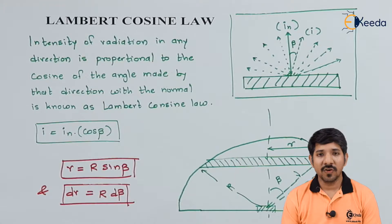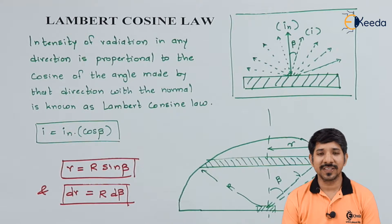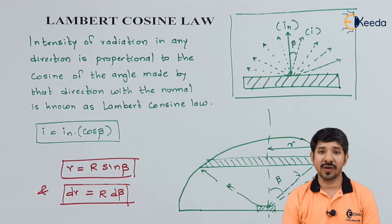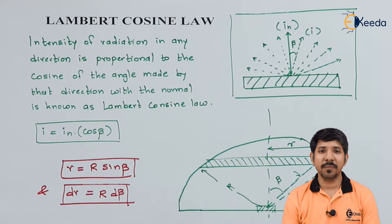What we have seen previously: the intensity of radiation itself is nothing but the rate of change of energy per unit solid angle. Now, this intensity of radiation may not be the same in every case.